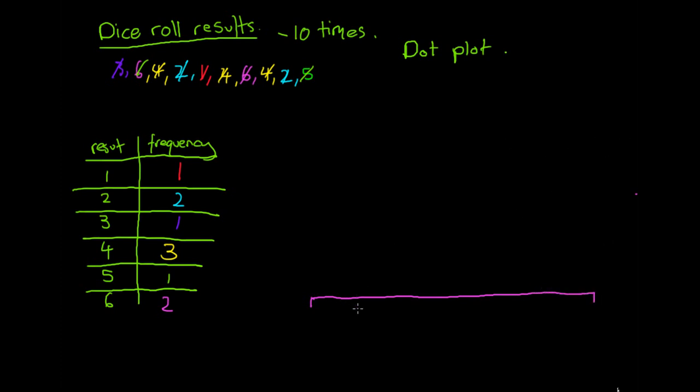And on this axis we break it into the categories we have or the possible outcomes. So down the bottom on our axis we have the possible outcomes. So for our dice roll this is going to be this column here. So this column here. These are our possible outcomes.